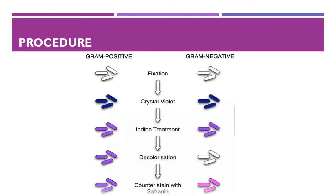Procedure: this is the flow diagram of the complete procedure of gram staining technique. First of all, take a clean grease-free glass slide. Prepare the smear of suspension on the glass slide with a loopful of sample. Air dry and heat fix — this is the fixation step.